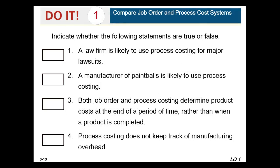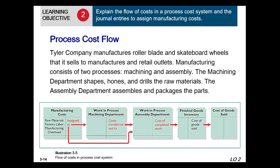Let's look at the Do It question comparing job order and process cost systems — indicate whether each item is true or false. Number one: a law firm is likely to use process costing for major lawsuits — false. A manufacturer of paintballs is likely to use process costing — true, because one paintball is the same as another. Both job order and process costing determine product cost at the end of a period rather than when the product is completed — false. Process costing does not keep track of manufacturing overhead — false; that's a critical cost in both processes.